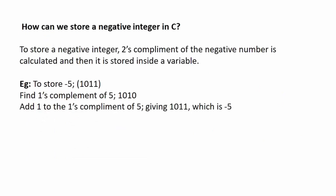Next question: how can we store a negative integer in C? To store a negative integer, the two's complement of that number is calculated first, and then that value is stored inside the variable. For example, if we want to store -5, the binary value of 5 is 0101. The one's complement of 5 is 1010. After that, 1 is added to the one's complement of 5, giving 1011, which is nothing but the binary representation of -5.